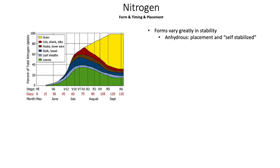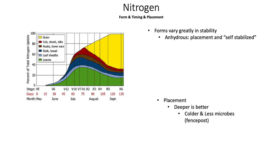Let's look at some commonly used nitrogen sources and their advantages and disadvantages. I am a big fan of using anhydrous as about 75% of your total nitrogen program, and there are really three reasons for that. First, we can very accurately apply anhydrous, which is always a good thing. Second, we are placing anhydrous deeper in the soil profile than any other nitrogen source — and I go back to the example of the fence post.